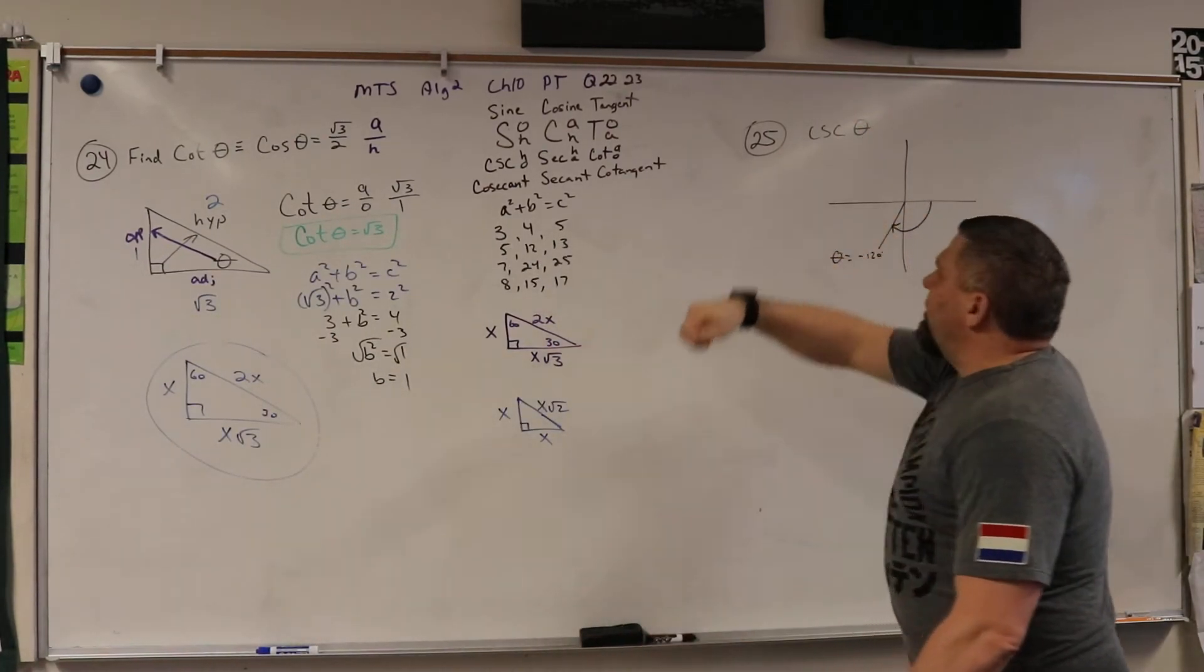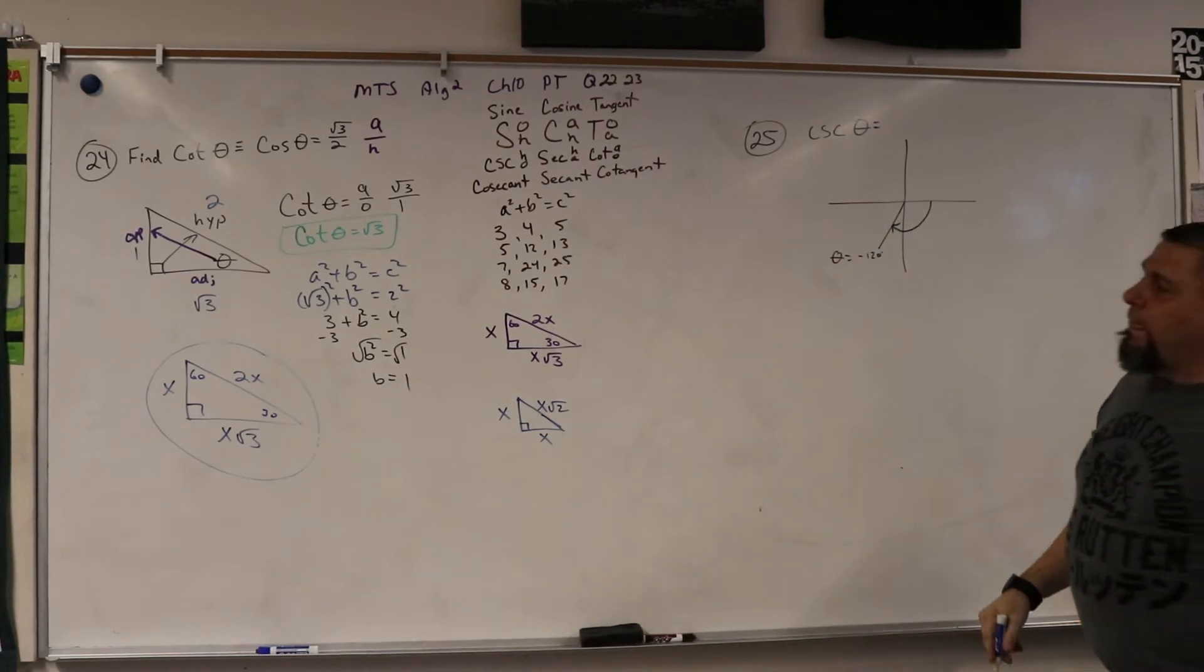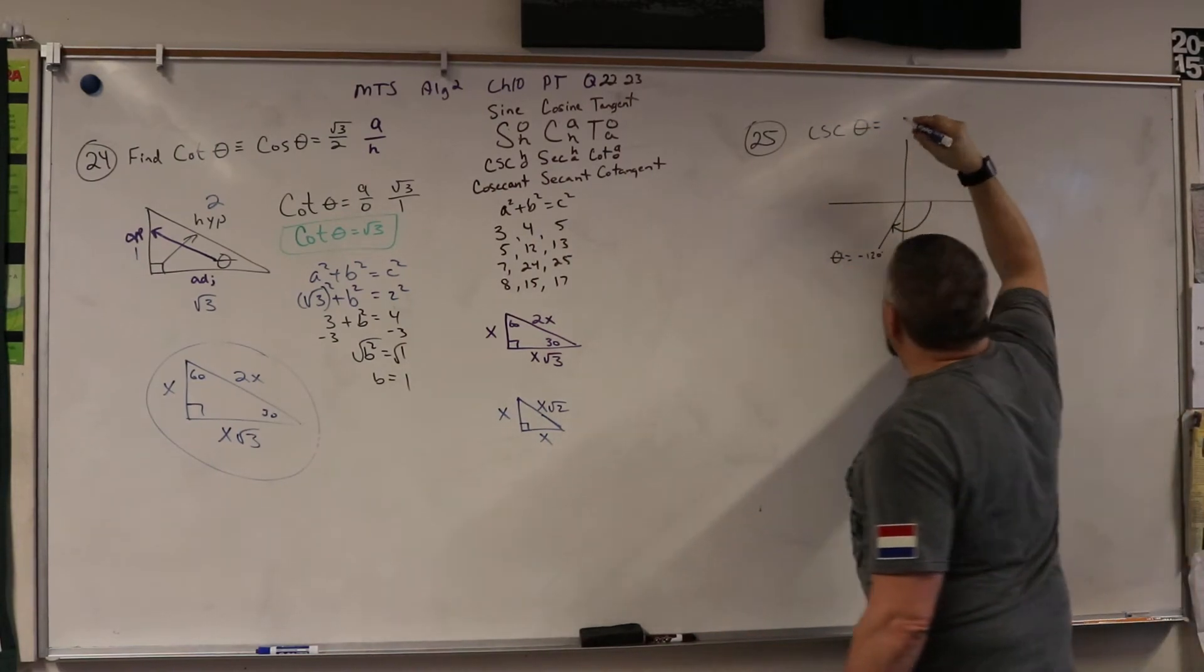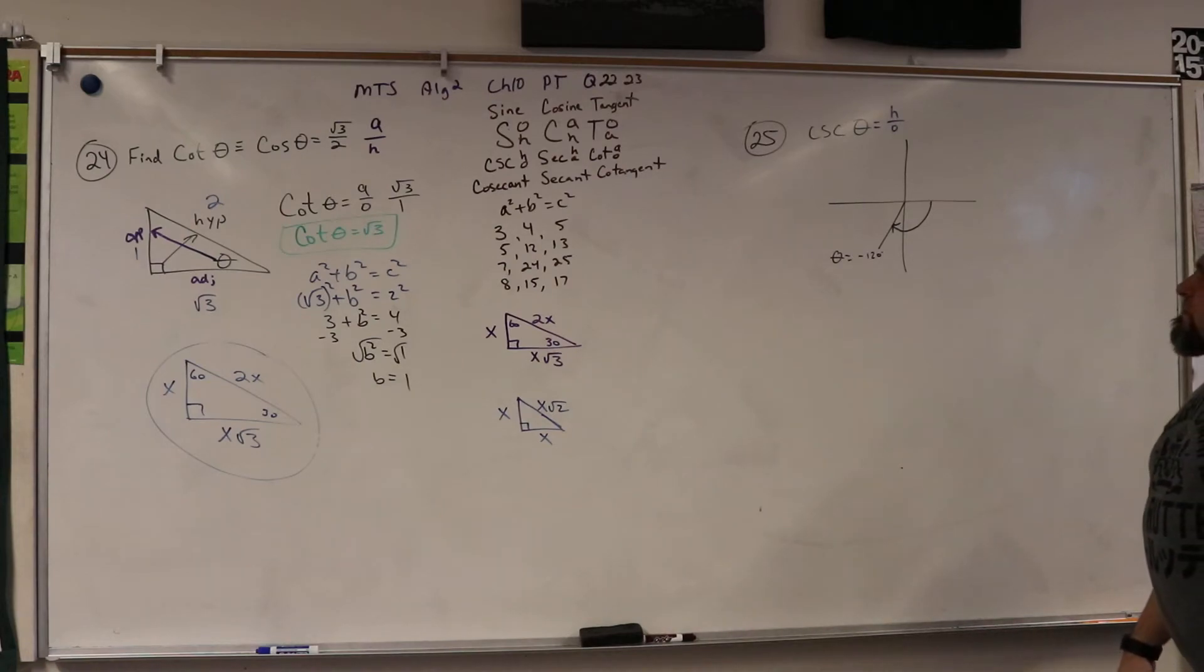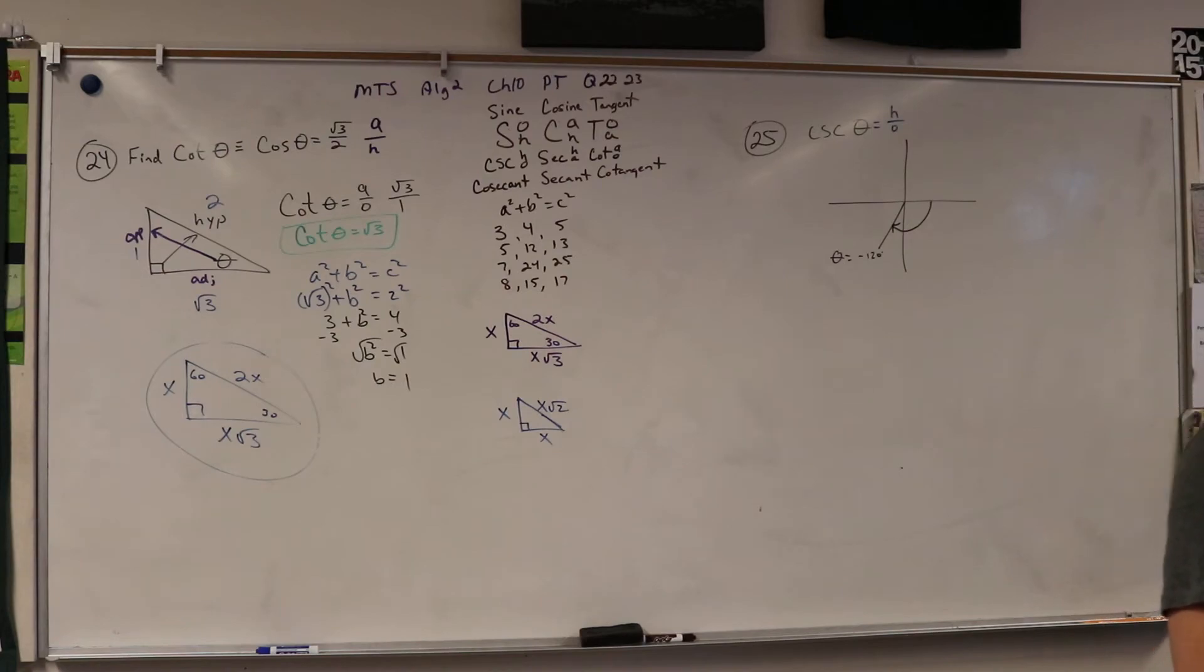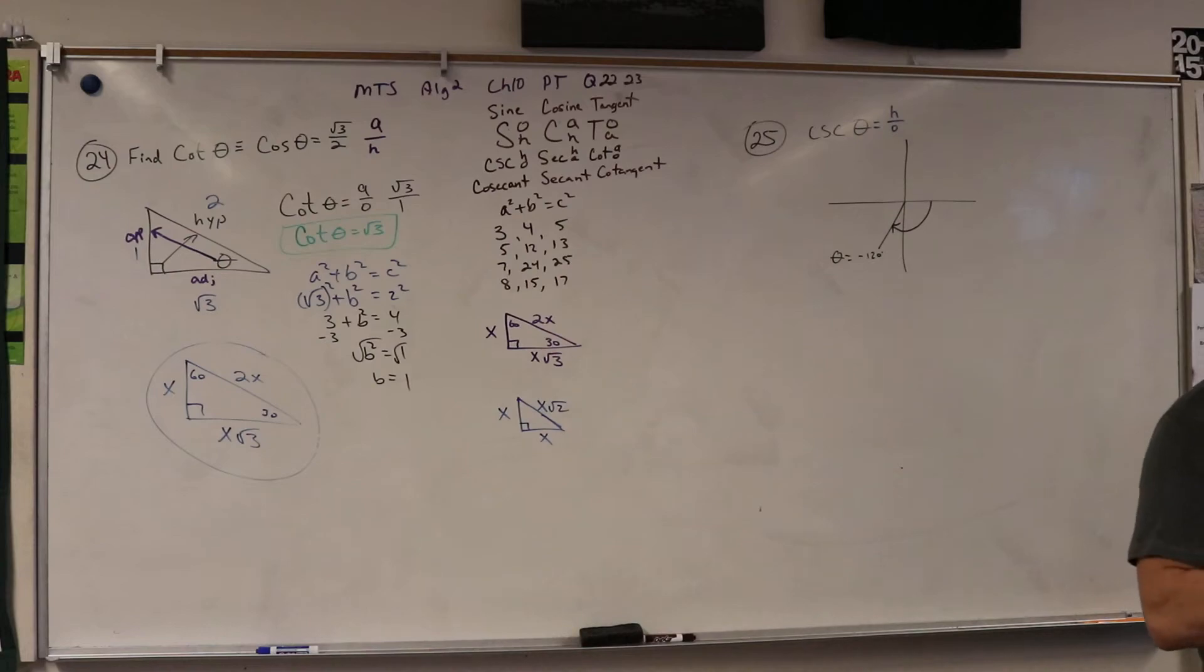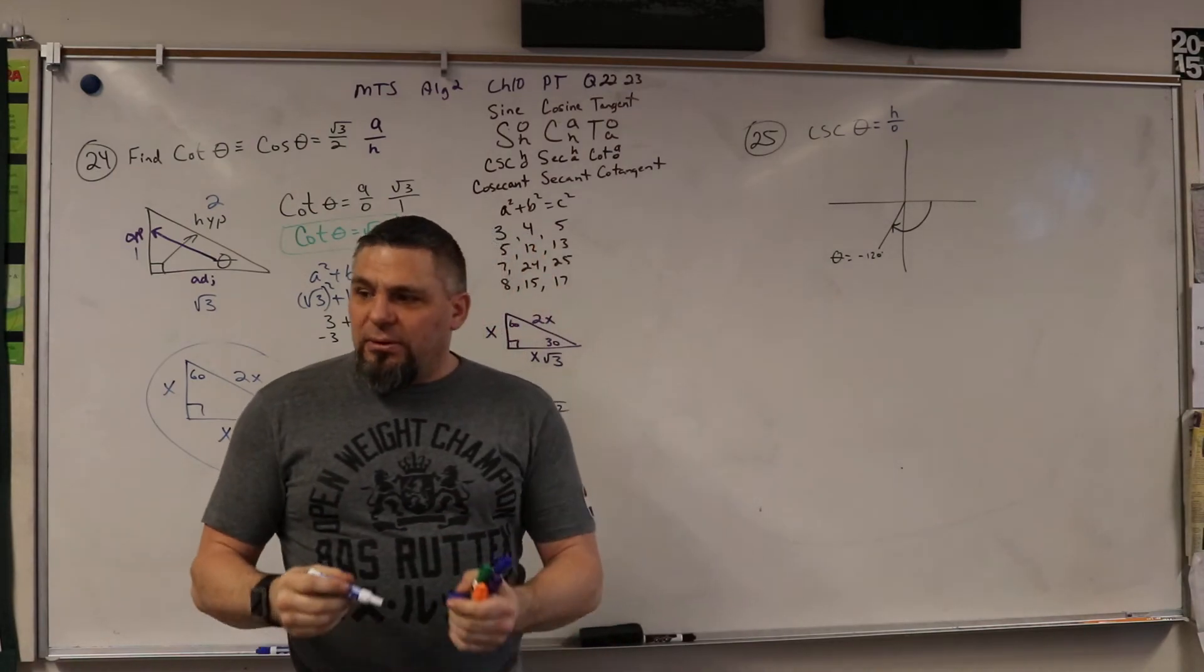All right, so I need to know what cosecant is. What is cosecant? Oh, hypotenuse over opposite. Okay, all right. So I need to know what triangle we're using. The other thing I need to know is when I plug this into my calculator, what's going to happen? Now this is a negative 120, but all I care about is where it is on the graph. Where is it on the graph?